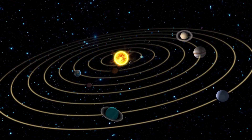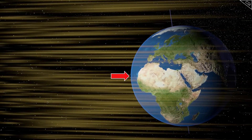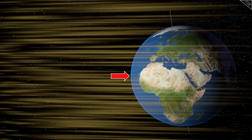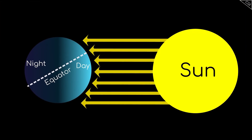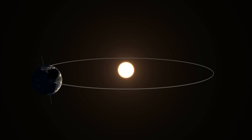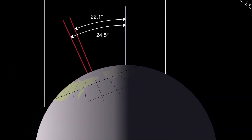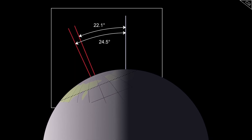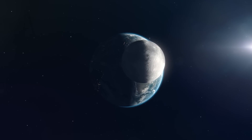Obliquity refers to the angle of inclination of the Earth's axis concerning its orbital plane, and varies between 22.1 degrees and 24.5 degrees over a cycle of about 41,000 years. This angle determines the severity of the seasons: a higher tilt angle causes colder winters and warmer summers in both hemispheres, while a smaller angle reduces this seasonal difference. Obliquity directly impacts the distribution of insolation, especially at high latitudes, and thus on the formation of glaciers.